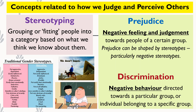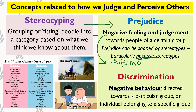Moving on from stereotypes, we're looking at prejudice and discrimination. You need to know the difference between the two. Prejudice is your negative feeling or negative judgment towards people of a certain group — like the affective component of the tri-component model. It's how you feel about a group, and with prejudice it's usually a negative feeling. Negative stereotypes like 'all Muslims are terrorists' or 'all blondes are dumb' can lead to prejudice, which is why negative stereotypes are problematic.